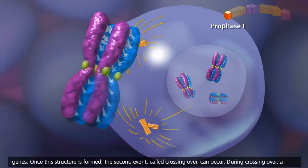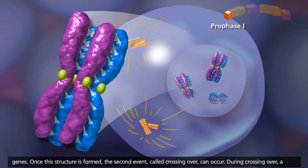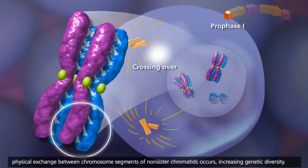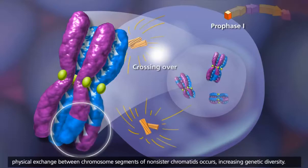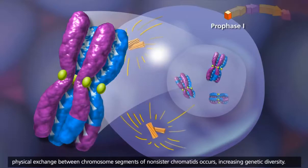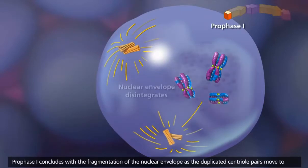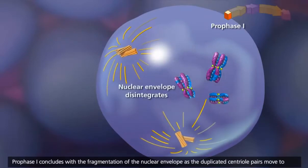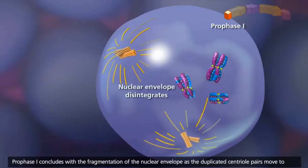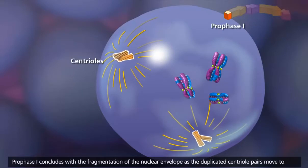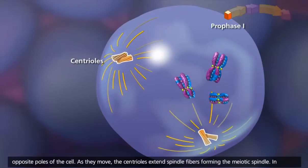Once this structure is formed, the second event, called crossing over, can occur. During crossing over, a physical exchange between chromosome segments of non-sister chromatids occurs, increasing genetic diversity. Prophase I concludes with the fragmentation of the nuclear envelope as the duplicated centriole pairs move to opposite poles of the cell.